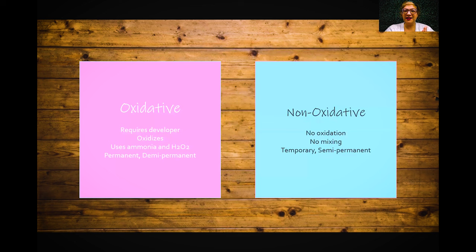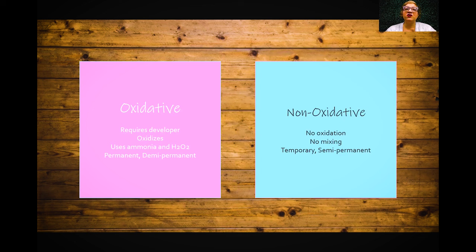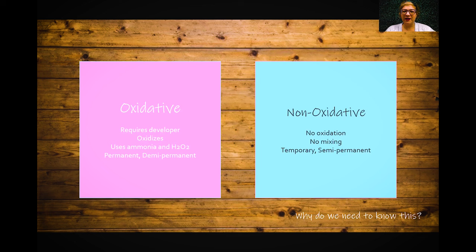Fundamental number one: the types of hair color. You have oxidative and non-oxidative hair color. Oxidative requires a developer — it oxidizes in the hair, which means you see it changing color when oxygen starts to hit it. It uses ammonia and H2O2 (hydrogen peroxide), and it can be permanent or demi-permanent hair color. The key with oxidative is that it uses ammonia, uses hydrogen peroxide, and you have to mix it to make it work.